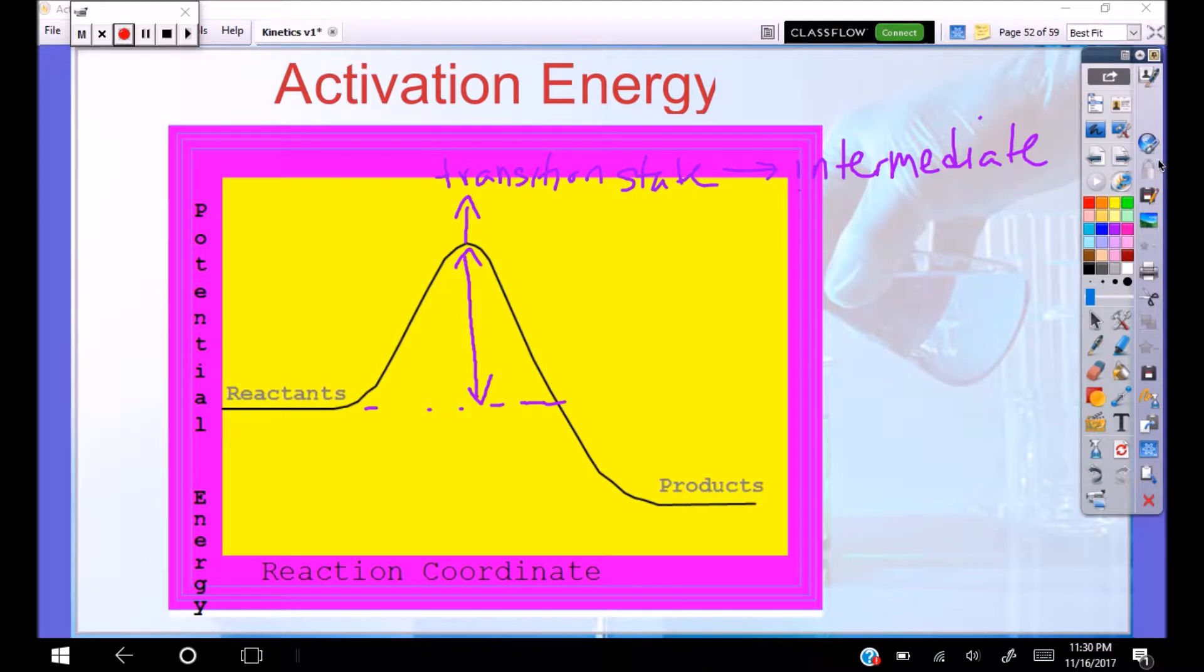The energy between the reactants and the peak here is our activation energy. So we're going to use EA. Now the other thing we like to label a lot is the difference between the reactants and products. It doesn't really have a place here in this playposit on Arrhenius equation, but it is delta H. So I just wanted to remind you of that.